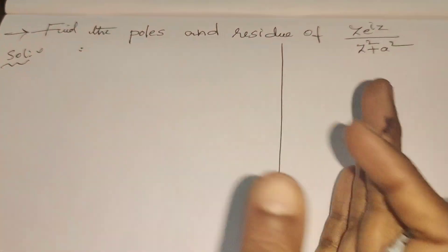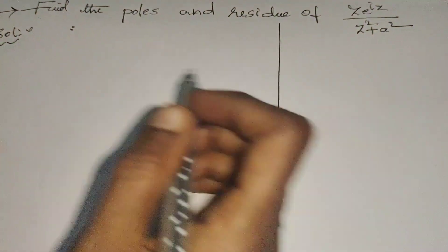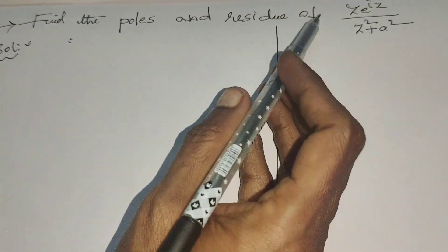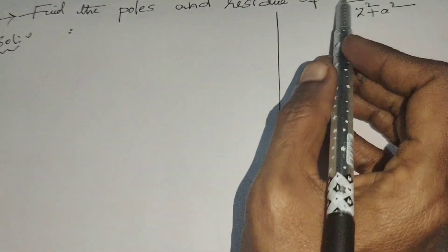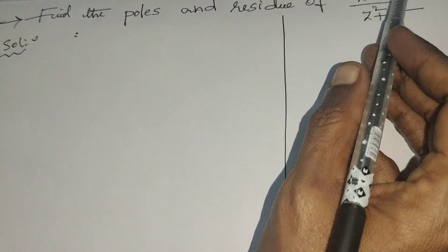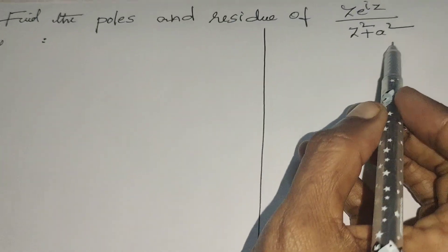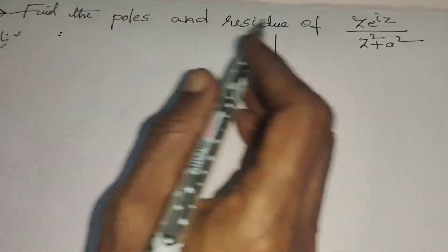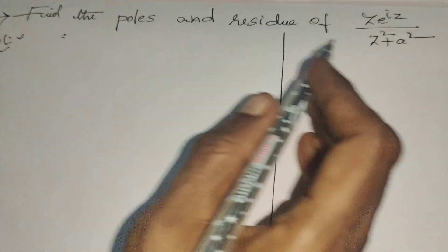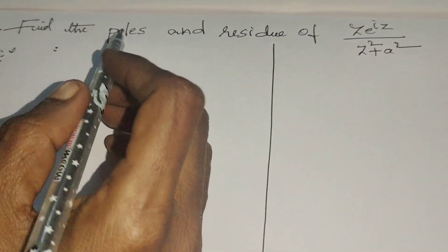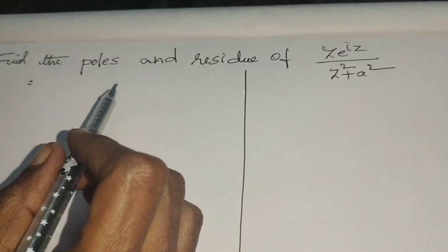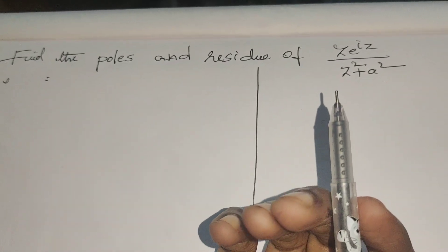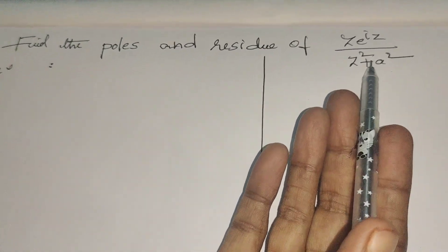Hi everyone, this is Dr. Aethi. Today we are going to explain how to find the poles and residue of the function f(z) = ze^(iz) / (z² + a²). Here we are going to explain the poles and residue of this function.